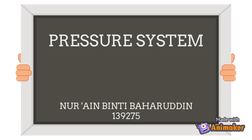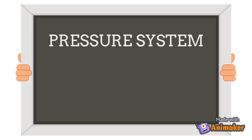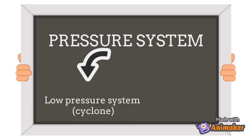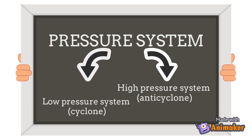This video will be about pressure systems. A pressure system is an area of the Earth's atmosphere that has a particularly high or low pressure compared to the air around it. Pressure systems can be a low pressure system, also known as a cyclone, or a high pressure system, the anti-cyclone.